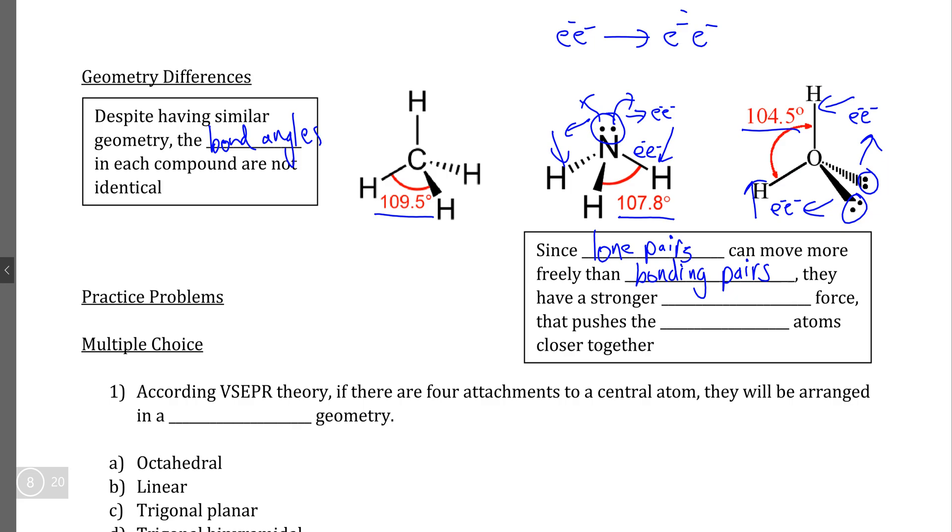So in summary, because lone pairs have more freedom of motion than bonding pairs do, they have a stronger repulsive force, which affects the bonds more than electrons in a bonding pair would, and therefore pushes the bonding pair atoms closer together, which again are the atoms that are joined to the central atom like this. And for that reason, even though the geometry is similar, the bond angles that exist in compounds with lone pairs will never be 100% identical to a compound that only contains bonding pairs.